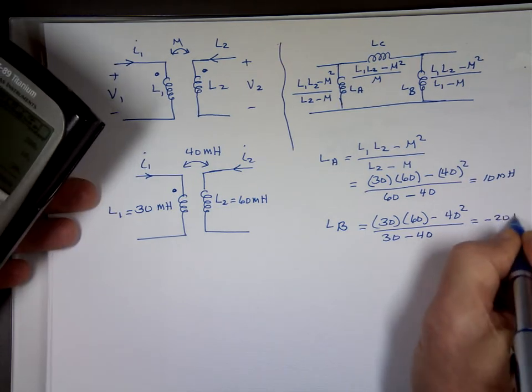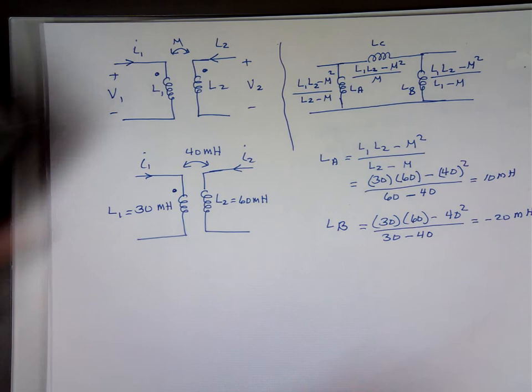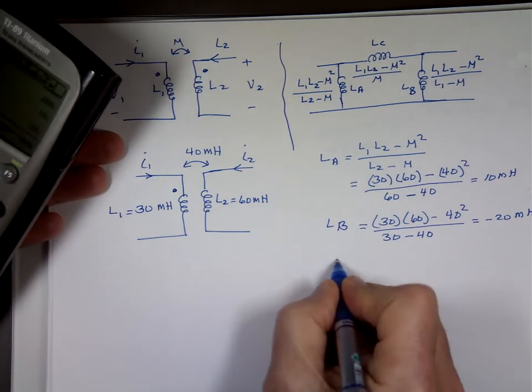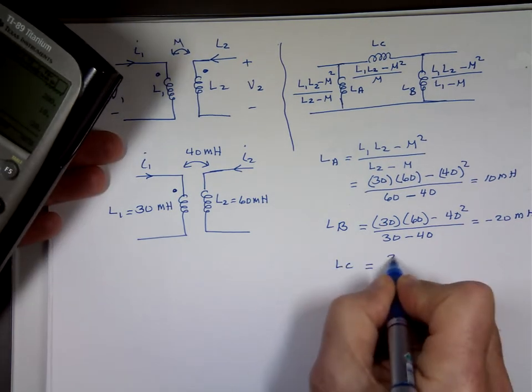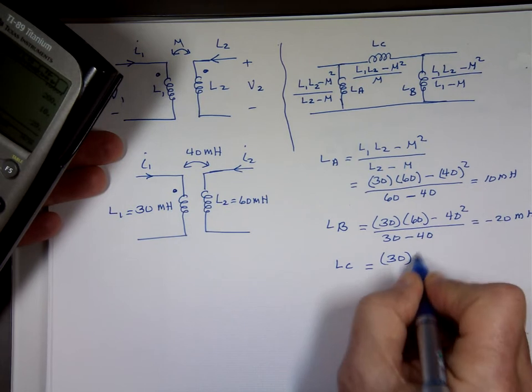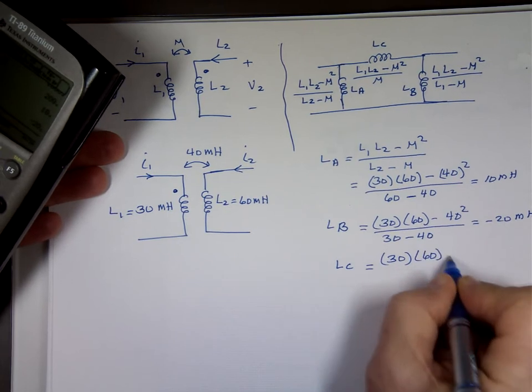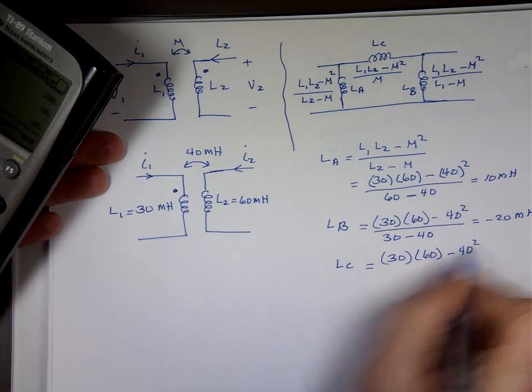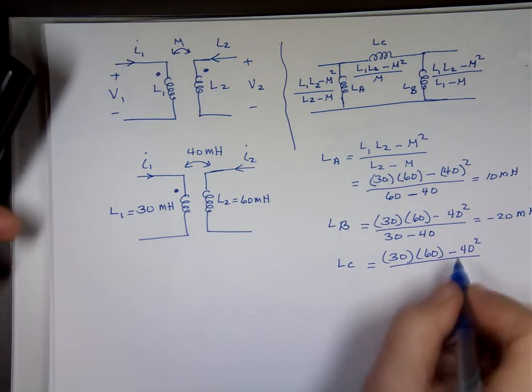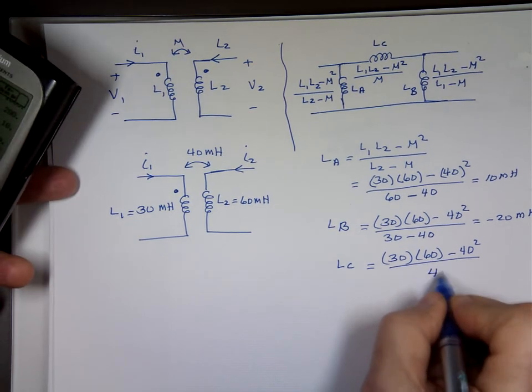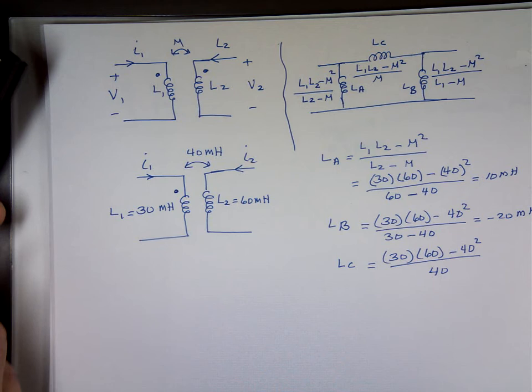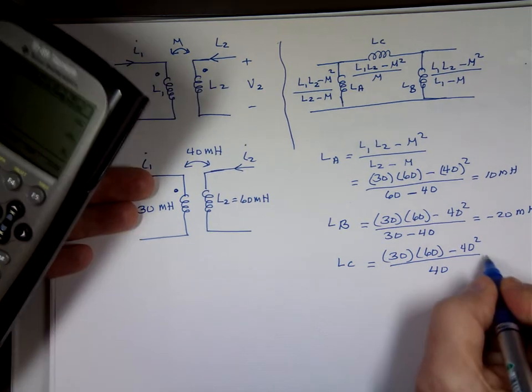So the top was 200 divided by negative 10. That's negative 20 millihenry. And LC is going to be 30 times 60 minus 40 squared divided by 40. That's 200 divided by 40. That's 5 millihenry.